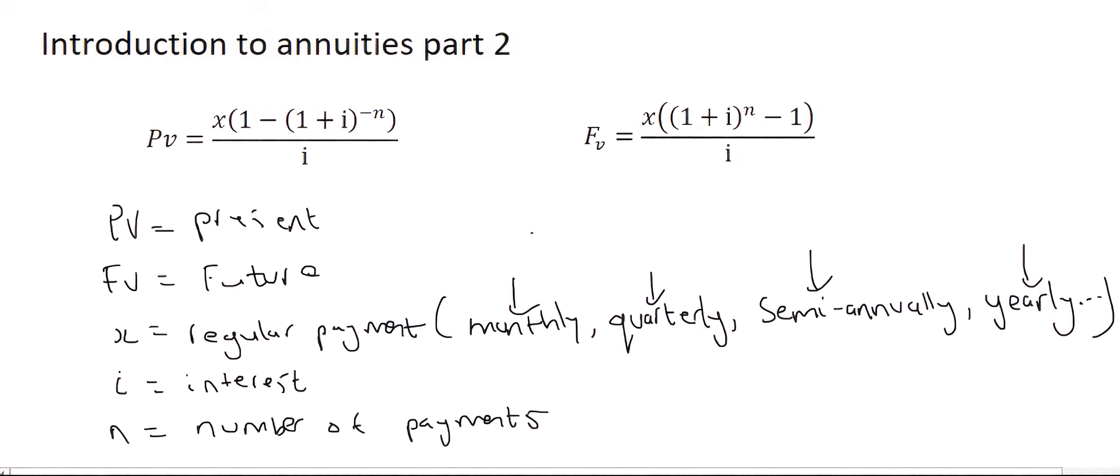So present value will typically be used for things such as loans, whereas future value will be used for things such as investments. Technically, you could use both methods for both of those, but schools usually show it in this type of way. As long as you remember, P is for present and F is for future.